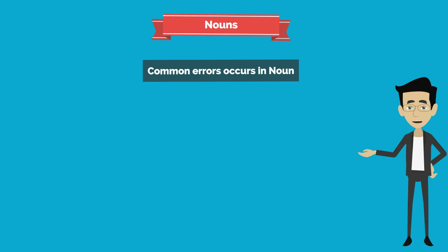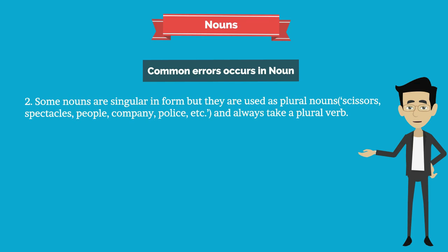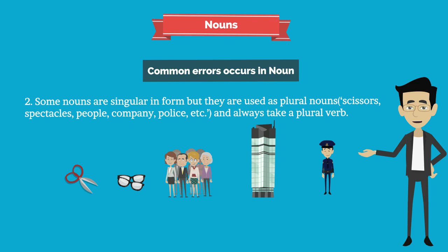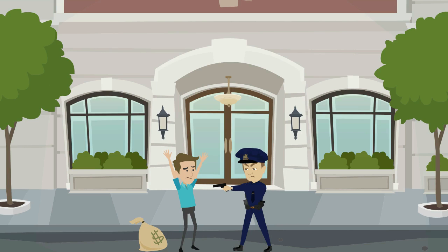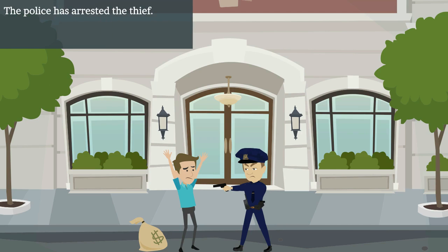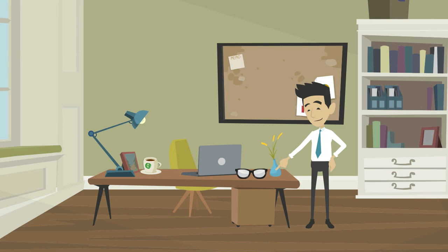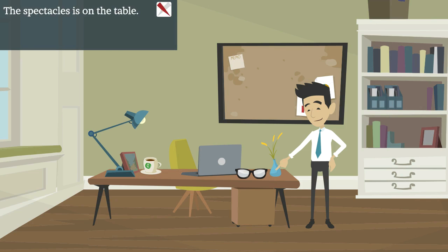Second common error: some nouns are singular in form but used as plural nouns — scissors, spectacles, people, company, police, etc. — and always take a plural verb. Incorrect: 'The police has arrested the thief.' Correct: 'The police have arrested the thief.' Incorrect: 'The spectacles is on the table.' Correct: 'The spectacles are on the table.'